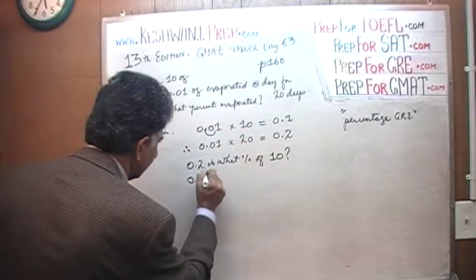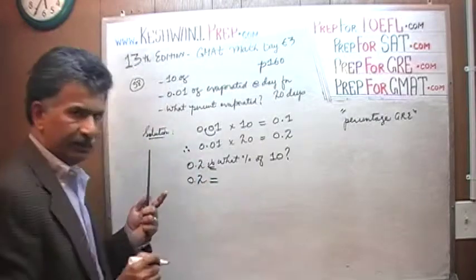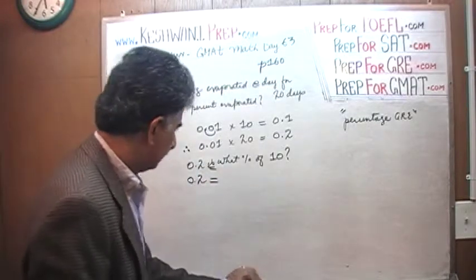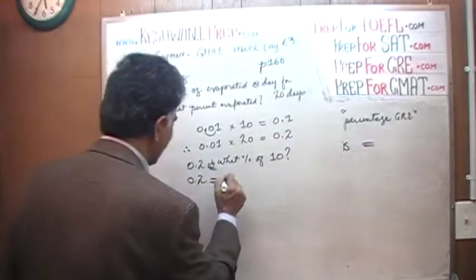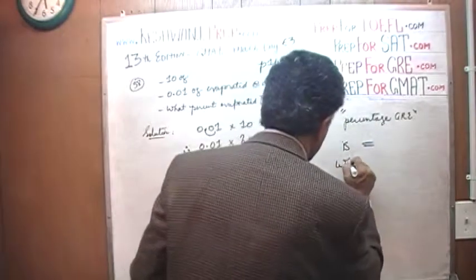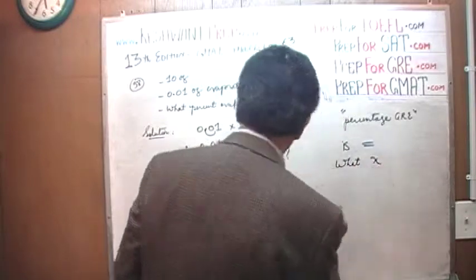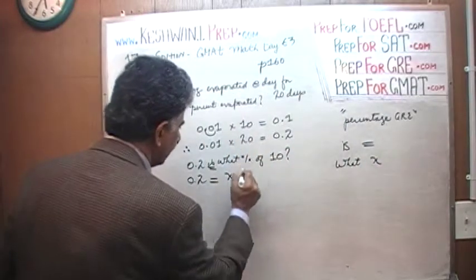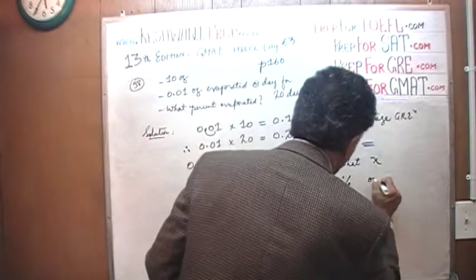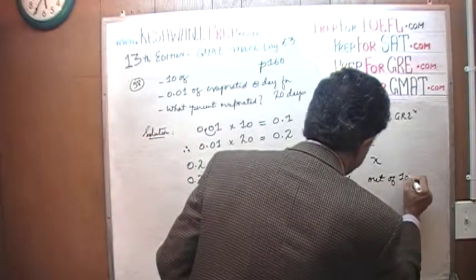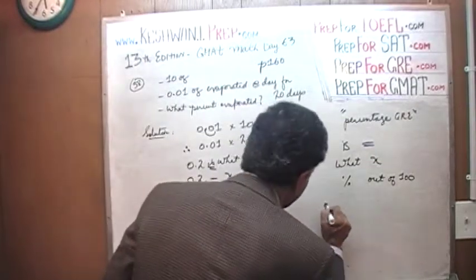The four words are these: 0.2 is - 'is' means equals. Is is your first word. Is means equals. What is your unknown.